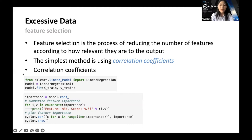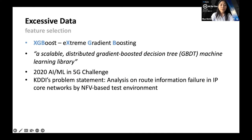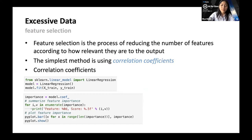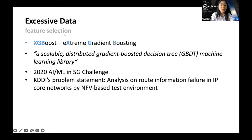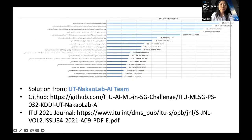That is the simplest way to do feature selection. Some advanced techniques from other problem statement solutions include using the XGBoost library — a scalable distributed gradient boosted decision tree machine learning library. It was used by the UT NACLE team from one of our 2020 problem statements with the same 997-column dataset. They used XGBoost to calculate the top 20 features and then used a certain percentage of the top features.